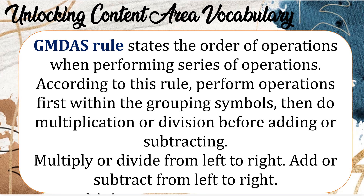The Gymnast Rules states the order of operations when performing a series of operations. According to this rule, perform operations first within the grouping symbols, then do multiplication or division before adding or subtracting. Multiply or divide from left to right, then add or subtract from left to right.